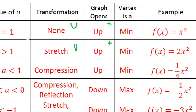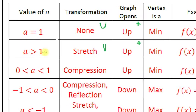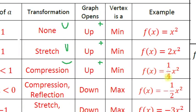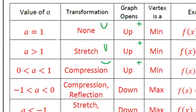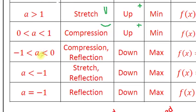What if a is between 0 and 1 — greater than zero but less than one? If a equals zero, the squared term becomes zero and the graph is a line, not a parabola. But if a is greater than zero and less than one, the graph is going to get squished or compressed. The graph still opens up because a is positive, so the vertex is a minimum. An example is f(x) = ¼x², which gives a compressed graph.